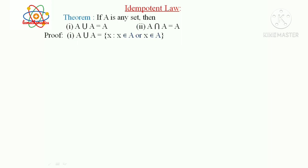Proof: X element of A union B means X is an element of either A or B. Therefore, A union A equals the set {x such that x ∈ A or x ∈ A} equals {x : x ∈ A} equals A. Therefore A union A equals A.